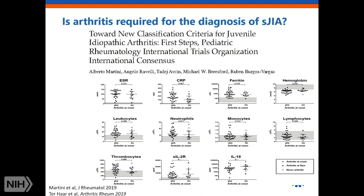As you can see, all of the laboratory parameters — ESR, CRP, ferritin, lymphocyte counts, but also the more sophisticated IL-18 and soluble IL-2 receptors — as well as the clinical symptoms, do not vary or differ from those patients who present with arthritis at onset.